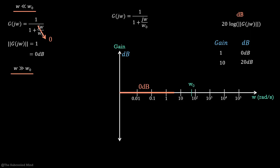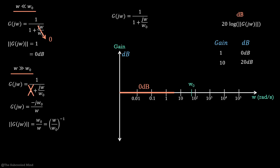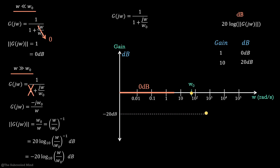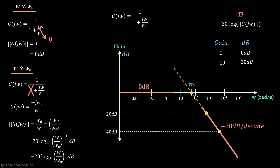Then, for the case when ω is much much greater than ω₀, we can ignore 1 in the denominator and the expression reduces to −jω₀/ω. The gain is ω₀/ω, or (ω/ω₀)^(−1). To find its decibel value, we take 20·log₁₀ of this, which turns out to be −20·log(ω/ω₀). At ω = ω₀ the gain is 0 dB; at ω = 10·ω₀ the gain is −20 dB; and at ω = 100·ω₀ the gain is −40 dB. So it is a straight line, and since it is drawn in log scale, we see a slope of −20 dB per decade.